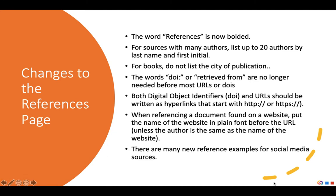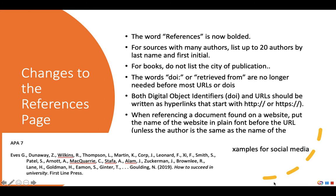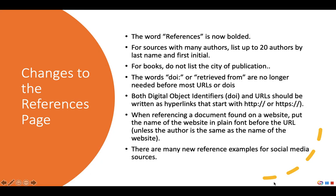In APA 7, you must list all the authors' names for sources up to 20 authors. If you have sources with more than 20 authors, you list the names of all the first 20 and then insert your ellipses — your three dots — and follow with the last author's name. Another significant change in the references is for published books: you no longer list the city where a book is published, only the publisher.